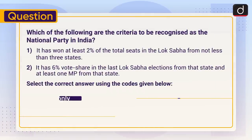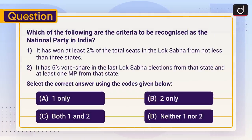Now it's time for the practice question. Which of the following are the criteria to be recognized as a national party in India? One: it has won at least two percent of the total seats in the Lok Sabha from not less than three states. Two: it has six percent vote share in the last Lok Sabha elections from that state and at least one MP from that state. Select the correct answer using the codes given below: one only, two only, both one and two, or neither one nor two. Send your answer in the comment section. Stay tuned for the next episode. Thanks for watching, have a great day.